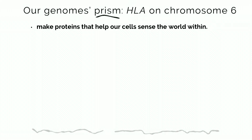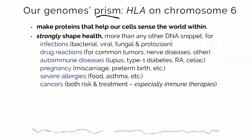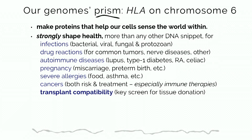HLA makes proteins that are kind of like hands. There are five genes — think of them as the five fingers on each hand — two copies, mom and dad's copies that they gave you. Those help our cells sense the world within us: figure out what's going on inside and how do we respond to it. Is there a threat? Is there a bug — a bacterium, a virus? Is there an allergen? Those genes help us decide how to respond. They strongly shape our health outlook for many questions, and they are the epicenter of diversity in our genomes — where our genomes vary more letter for letter than just about anywhere else. That's why it's so hard to find a match for somebody who needs a bone marrow transplant.